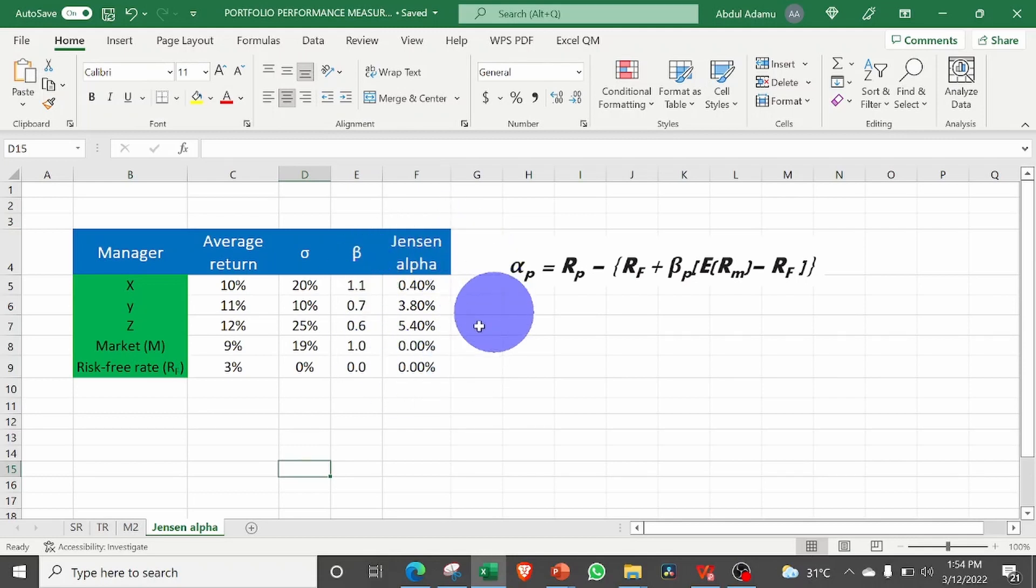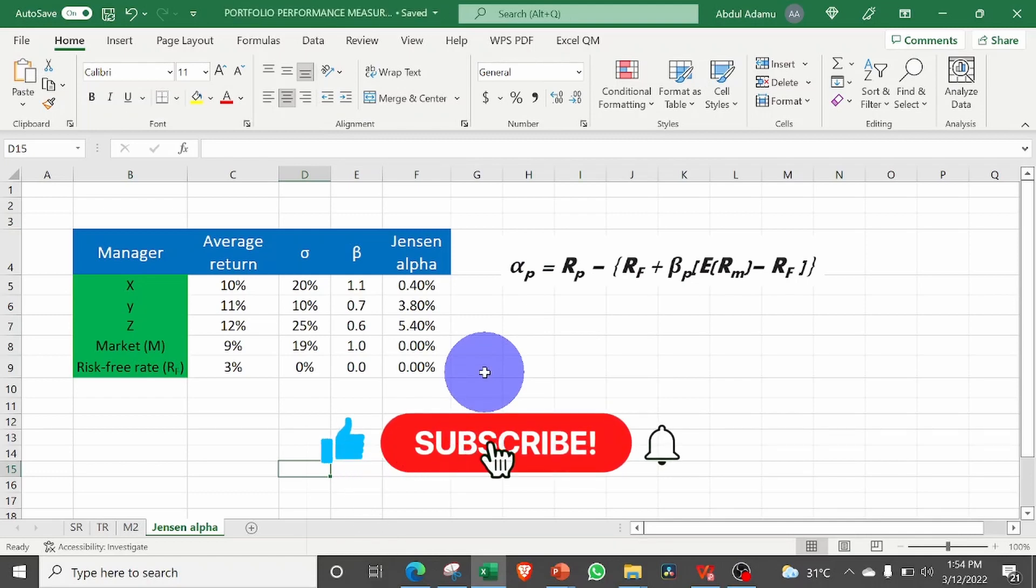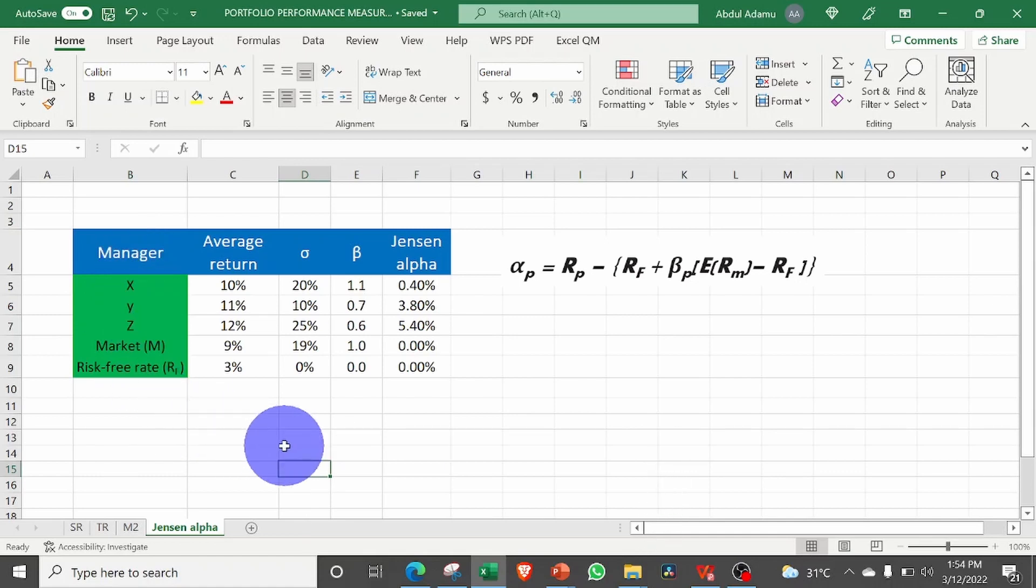From this, you can see that portfolio Z has a higher Jensen alpha followed by portfolio Y and X in that order. So we have come to the end of this lecture. If you enjoy our content, consider subscribing to our YouTube channel at Data Analytica. Also like our video and comment on where we feel we can improve on. Thank you very much. If you have not watched the other ones, just go to our YouTube channel. We have a lot of content there for you. Bye.